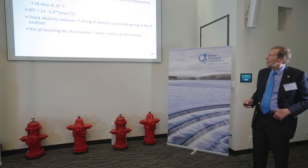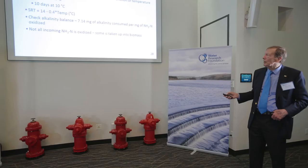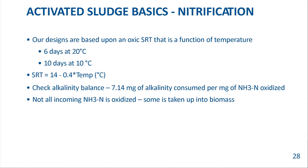We have to keep the nitrifiers in the system — they only make up about 5 percent of the biomass. Temperature adjustment is important: in colder climates, tanks are bigger because we need longer time to grow the nitrifiers. The alkalinity consumed is a key consideration. Also, a lot of the ammonia is actually tied up in the surplus biomass, and when we digest that, it causes a return stream of ammonia coming back to the plant.